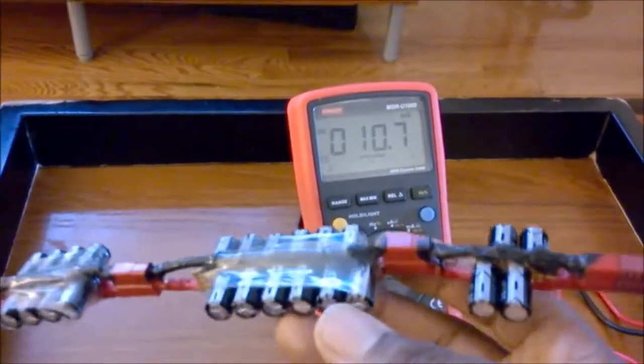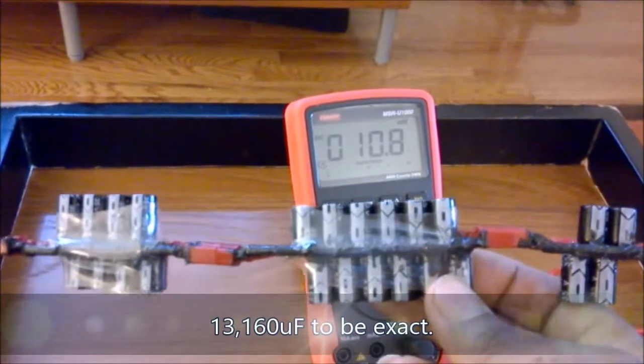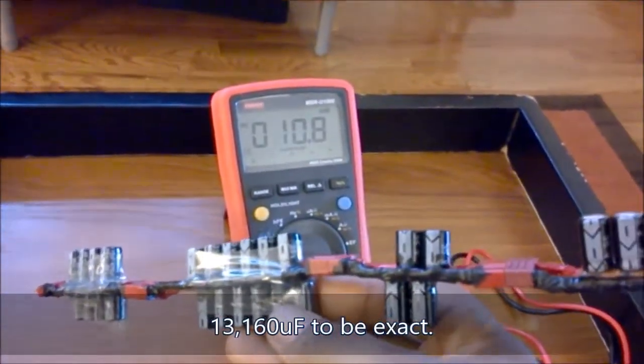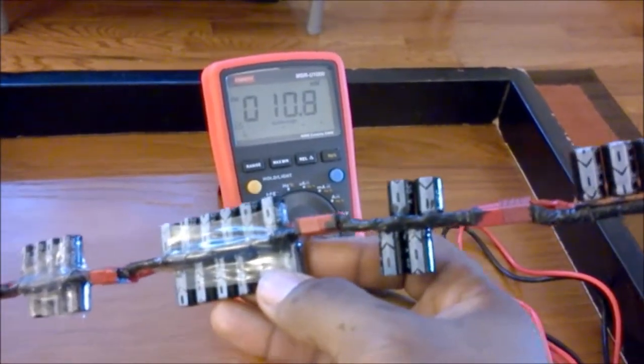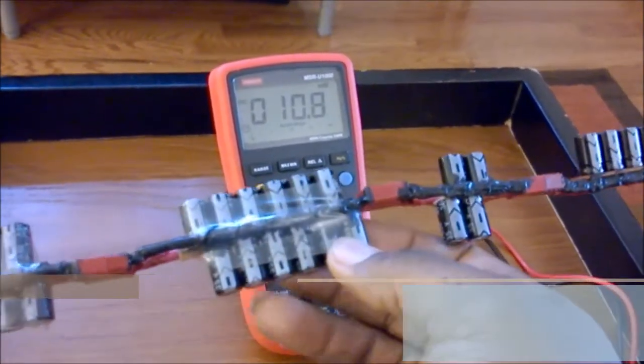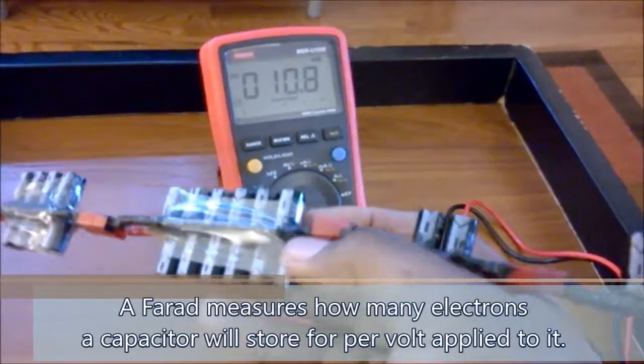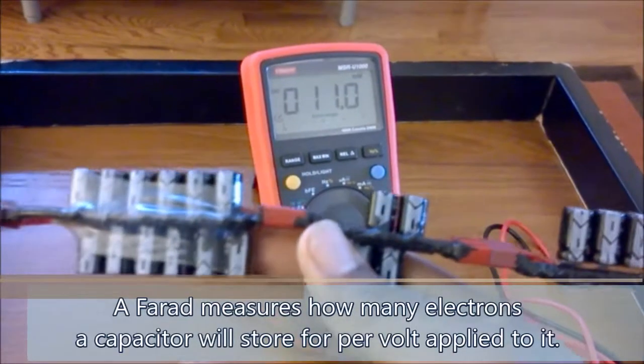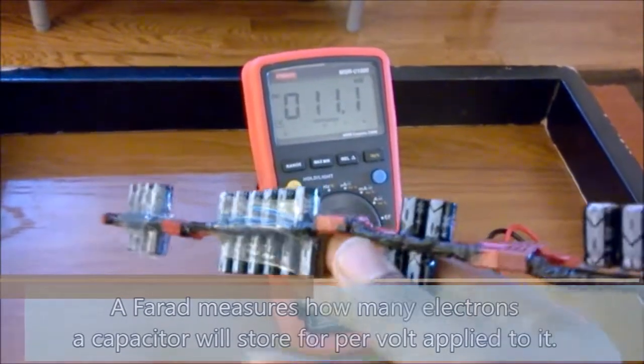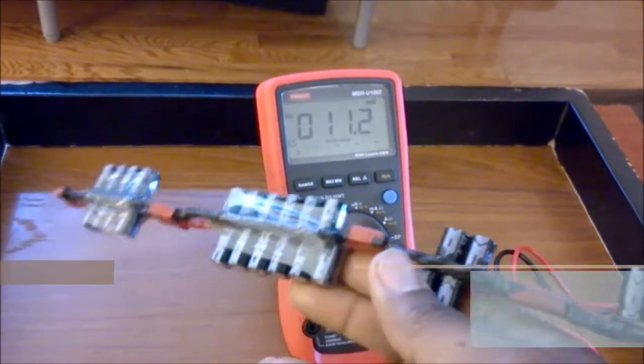So what you're looking at right here is actually 13,000 microfarads—basically this thing is a very large capacitor right now. Microfarad is a unit that you use to measure how powerful a capacitor is. So each one of these is 470, and there are 28 all hooked up here. So 28 times 470 is just over 13,000.